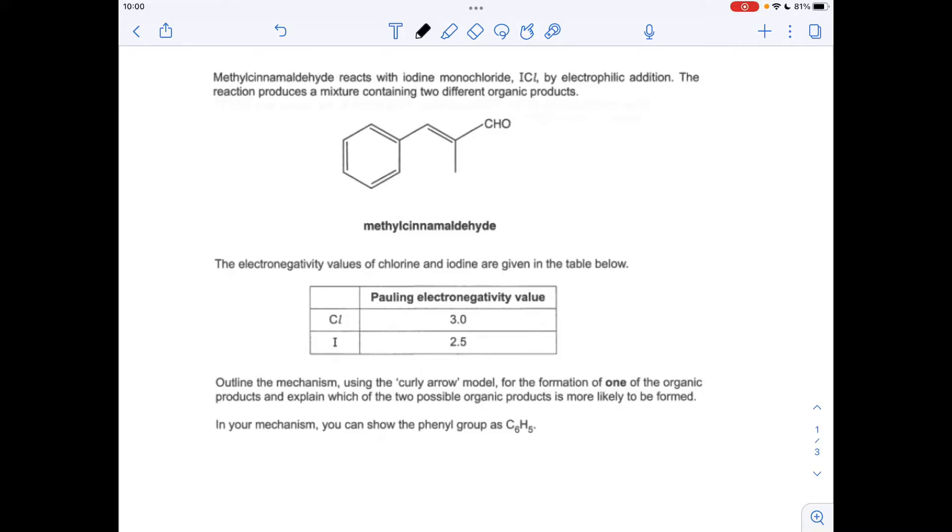So the first thing I've got to do is work out which way the dipole goes on the ICL molecule. That's obviously where the electronegativity values kick in. So if we just draw up ICL, chlorine's more electronegative than iodine, so chlorine's going to be the slightly negative end and iodine is the slightly positive end.